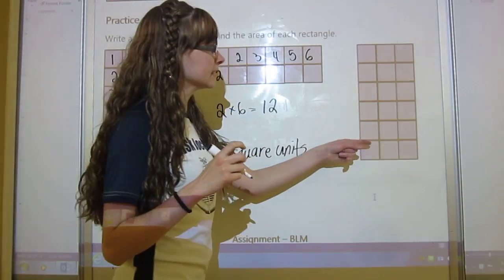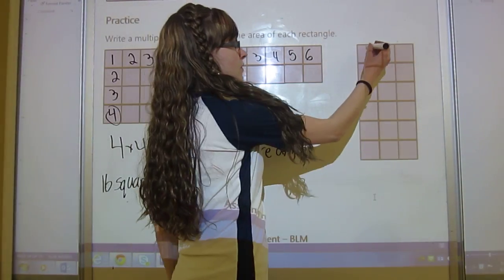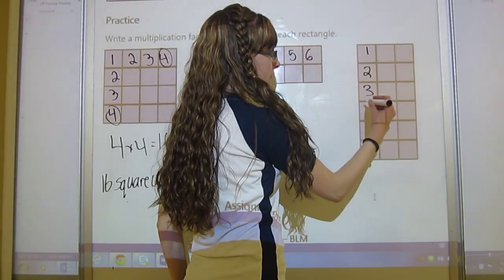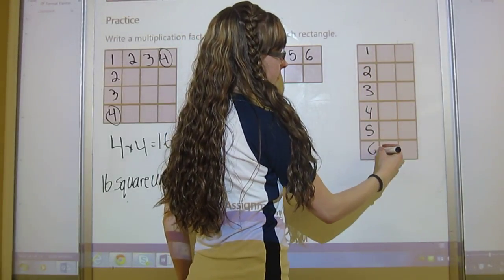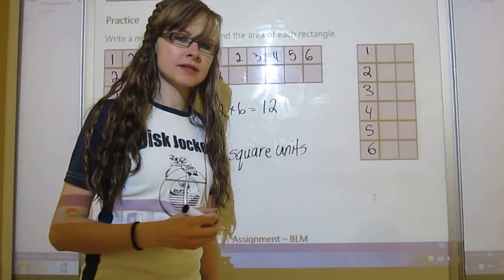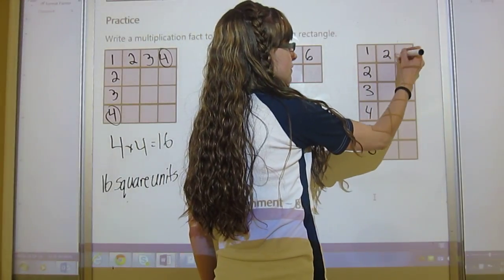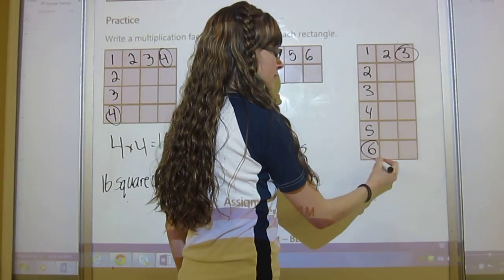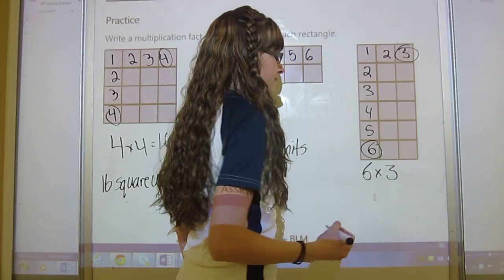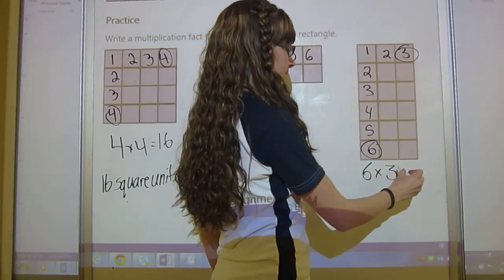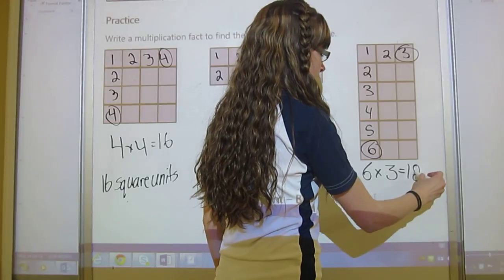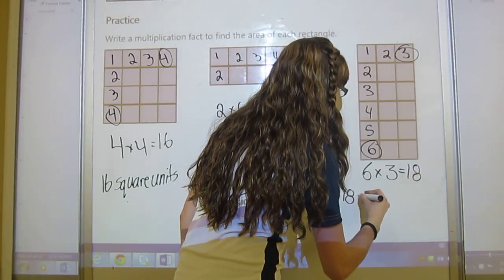And then the last one over here, it is one, two, three, four, five, six rows. And how many columns? One, two, three. So we multiply six times three, and six times three is 18. So this would be 18 square units.